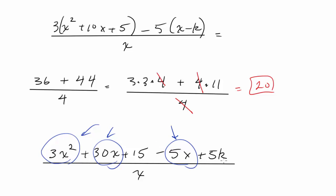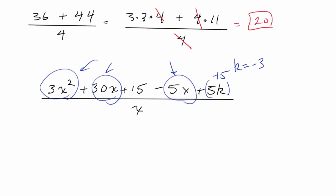And there's the trick. We can make k equal to negative 3. And if that were the case, this becomes negative 15. And now suddenly 15 plus negative 15 cancels. So let's set this up. We have 3x squared plus 30x plus 15 minus 5x. And imagine k is negative 3, so this becomes negative 15.